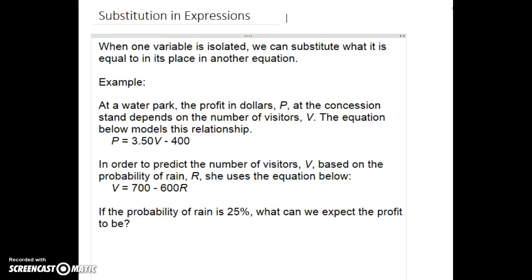In order to predict the number of visitors V based on the probability of rain R, this equation is used: V equals 700 minus 600R. This first question says if the probability of rain is 25%, what could we expect our profit to be?